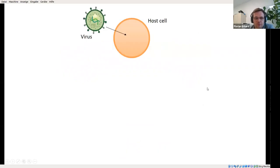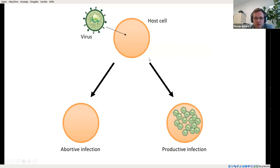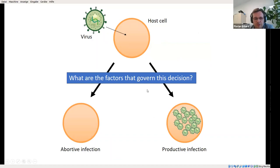What I find really interesting about virus infection is that even for cultured cells that are by all means very homogeneous, if they are infected with a virus, the outcome of the infection is highly heterogeneous. Some cells are able to defend themselves against the infection, whereas others are rapidly transformed into virus-producing factories. What's interesting to me is what are the factors that lead to these highly heterogeneous outcomes of infection?